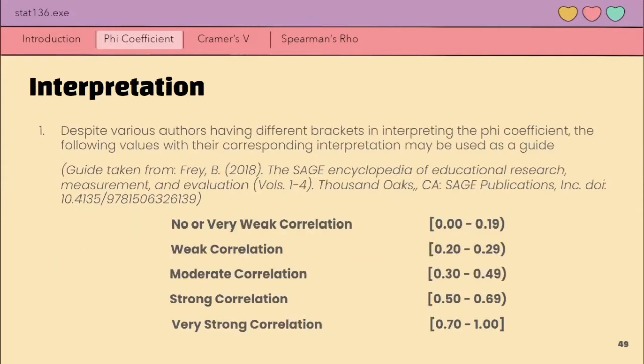So, ito yung interpretation niya. This is the table na we are going to use to interpret the degree of association of the phi coefficient. Andito rin yung mga intervals niya for each interpretation.